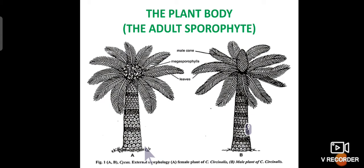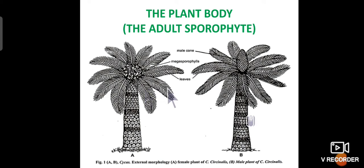Each plant consists of a thick unbranched columnar stem which bears a crown of pinnately compound leaves. The leaflets are arranged on both sides of the rachis. The leaflets are arranged in pairs on both sides of the rachis, and such a habit is referred to as arborescent, because they resemble a tree in their growth and appearance.